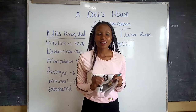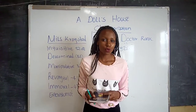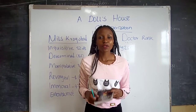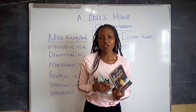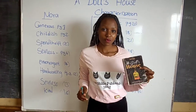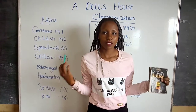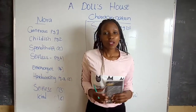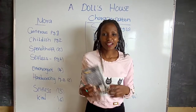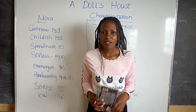That is Nora, Nils Krogstad, and Dr. Rank. I want you to watch this video through to the end because it's going to help you in answering your exact question. So what I want you to do, have a copy of this book and a pencil to mark the traits in the pages that we're going to mention.